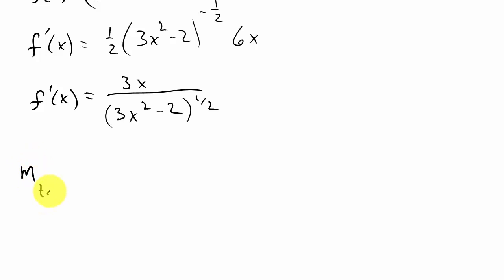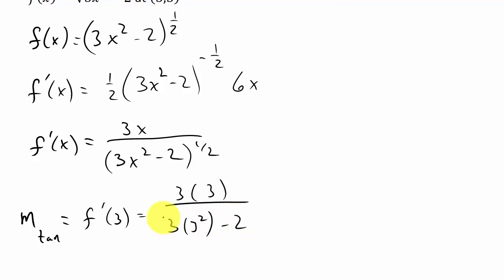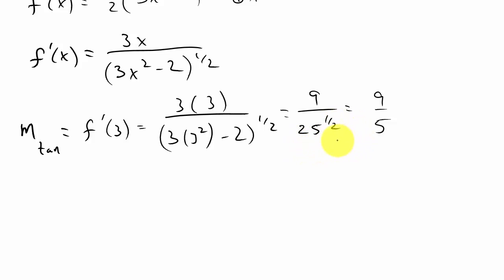Now let's find the slope — I'll use the subscript 'tan' to indicate this is the slope of the tangent line. That equals f prime evaluated at our point. There's no y value in the derivative, so I only plug in the x value, which is 3. So f prime of 3 is 3 times 3 over 3 times 3 squared minus 2, all raised to the 1 half. That gives me 9 over 27 minus 2, which is 25 to the 1 half — so that's 9 over the square root of 25, giving me 9 fifths. There's the slope of the tangent line.